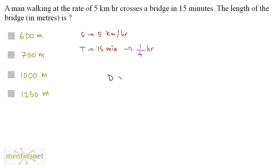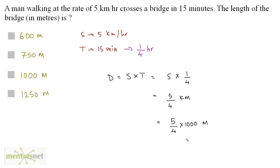We know the formula for distance: distance equals speed into time, which is 5 kilometers per hour times 1 by 4 hours. So 5 by 4 kilometers is the length of this bridge. But we need this in meters. So 5 by 4 kilometers is actually 5 by 4 times 1000 meters. 4 times 250 is 1000, and 250 times 5 is 1250, that is 1250 meters. So we have the answer, option D.